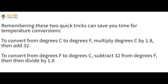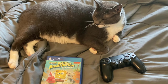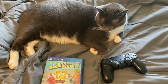Here are two quick tricks for temperature conversions — you'll need to memorize these. To convert Celsius to Fahrenheit: multiply the Celsius temperature by 1.8, then add 32. To go from Fahrenheit to Celsius: subtract 32 from the Fahrenheit temperature, then divide by 1.8.